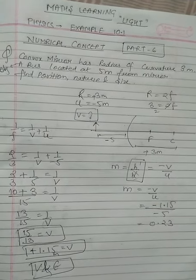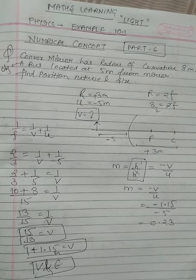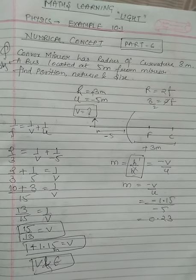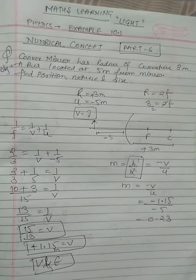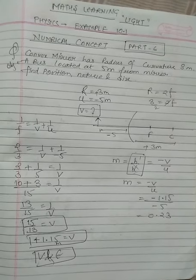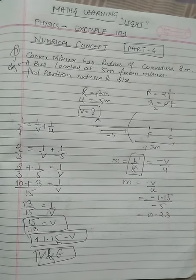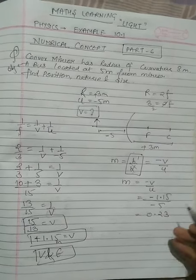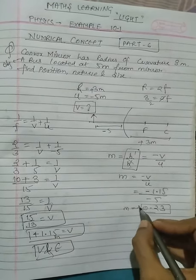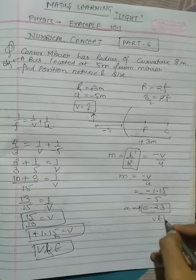How do we write this answer? The image is formed at a distance of 1.15 meters behind the mirror, and the nature is virtual and erect, and the image is smaller in size by a factor of 0.23, which means if magnification is 0.23 positive, that means virtual and erect image.